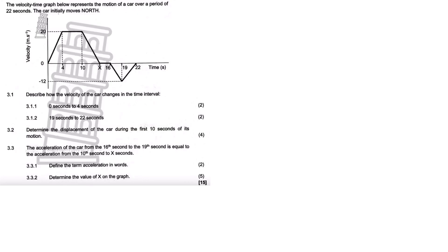Let's take a look at these graphs of motion questions. The velocity-time graph below represents the motion of a car over a period of 22 seconds. The car initially moves north. Question 3.1: Describe how the velocity of the car changes in the time interval 0 to 4 seconds.